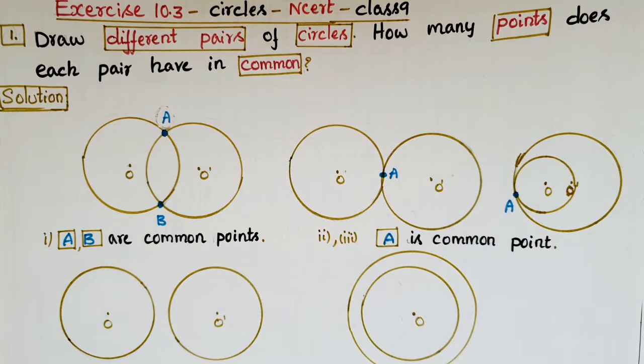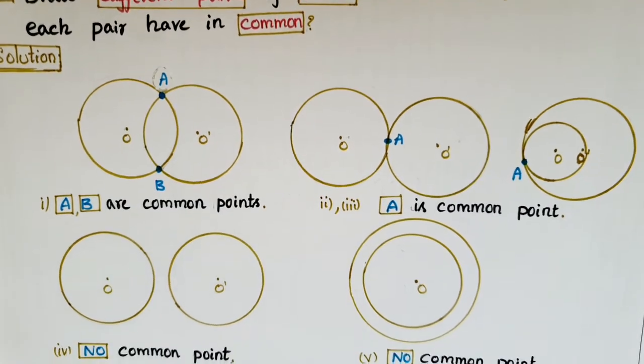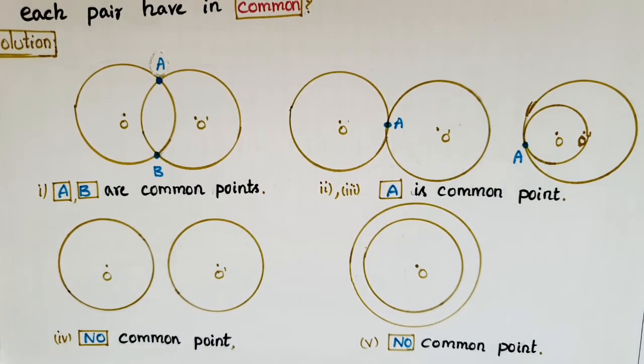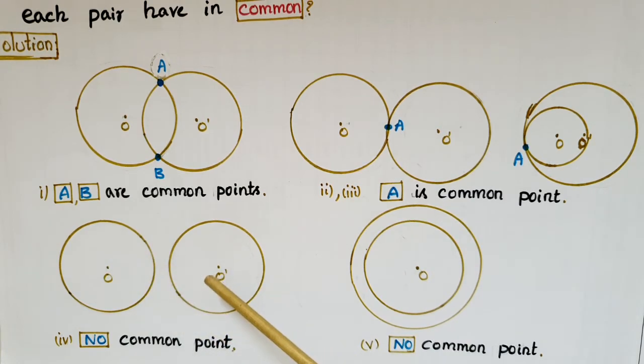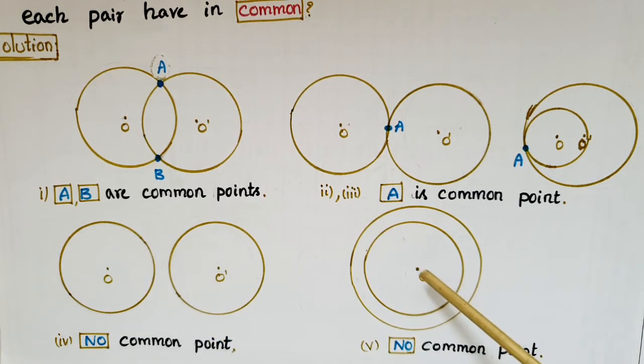And if you see the fourth figure, here there is no common point for these two circles. And in the fifth figure also there is no common point for these two circles.